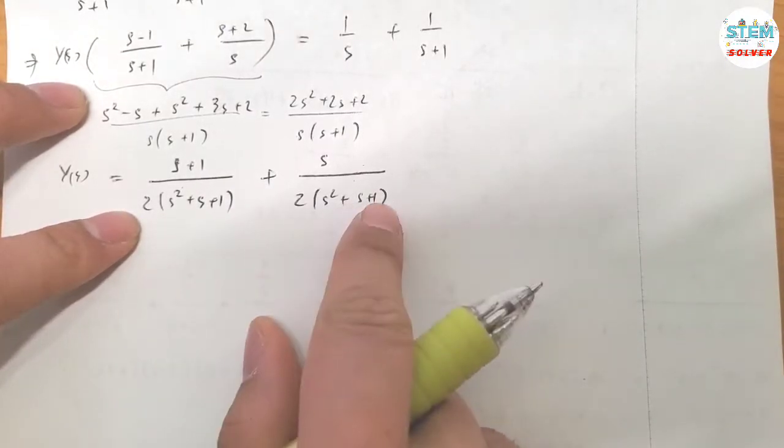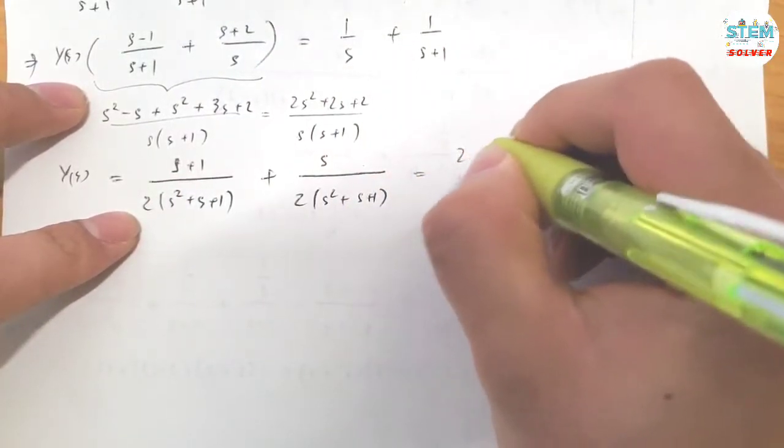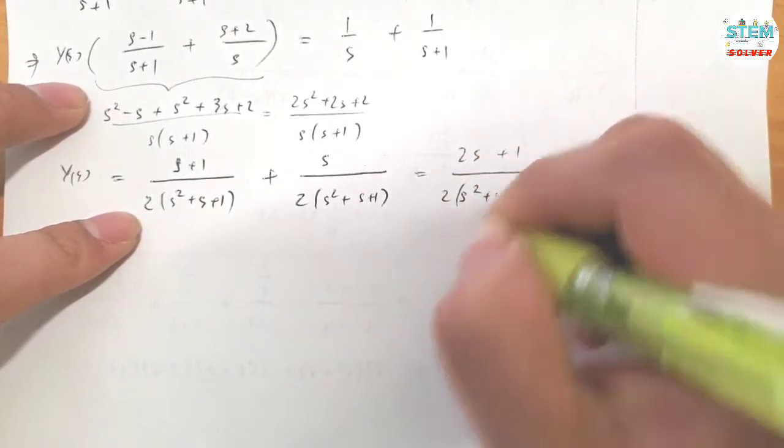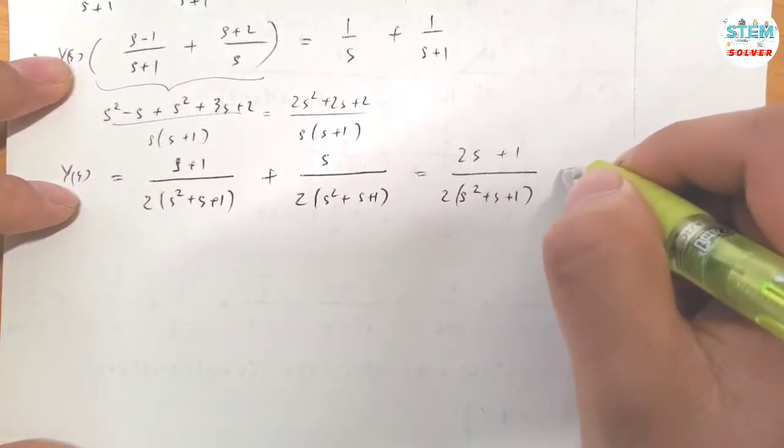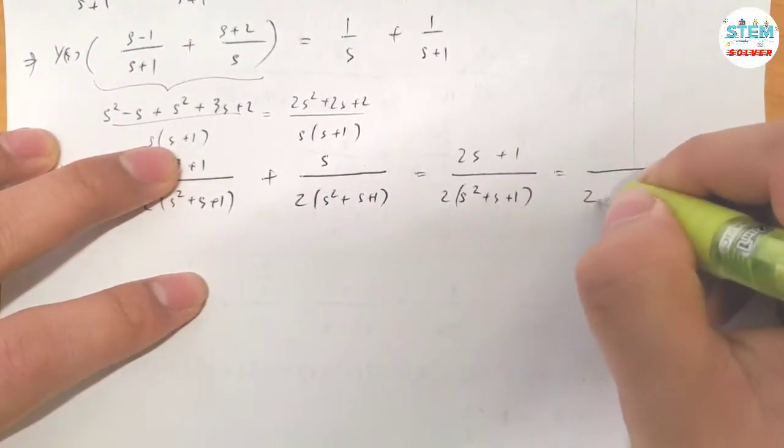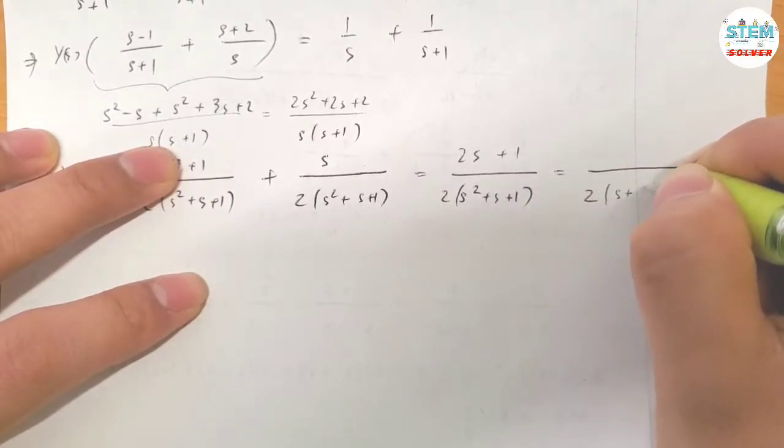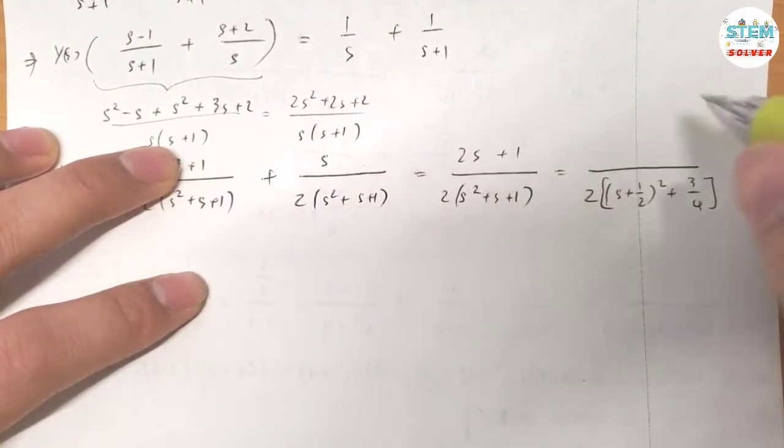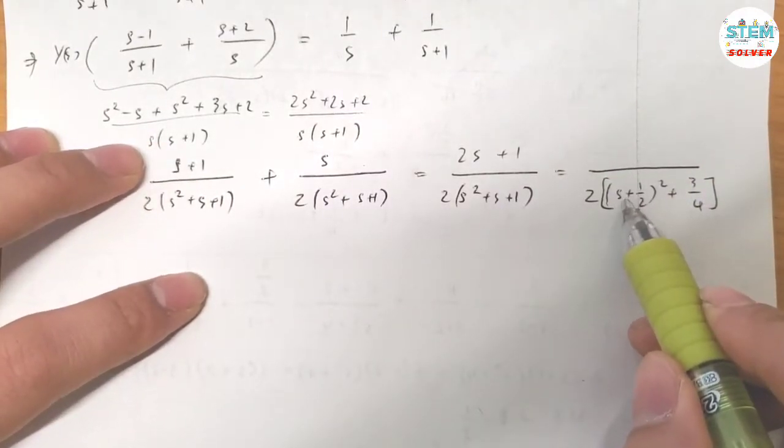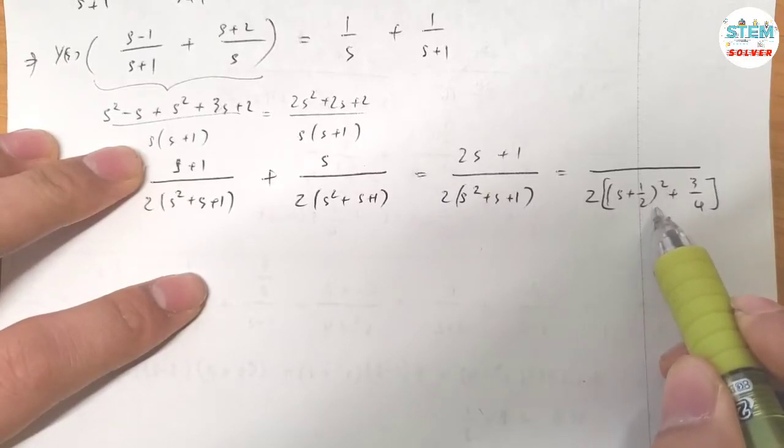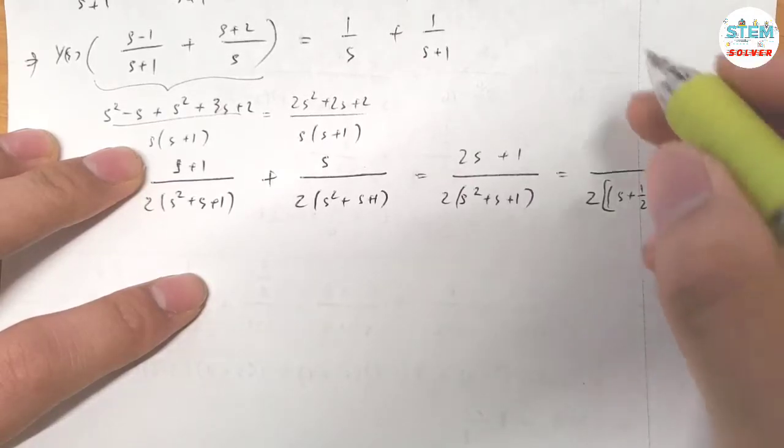Now, since they are the same denominator, I'm going to combine the top together, which gives me (2S plus 1) over 2 times (S² plus S plus 1). And I also want to complete the square on the bottom, which gives me (S plus 1/2)² plus 3/4. So S² plus 2 times 1/2, which is S, plus 1/4 plus 3/4 would give me 4/4, which is 1.